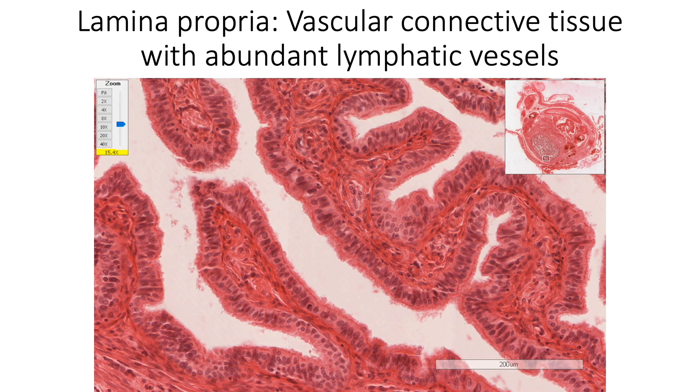Lamina propria is made up of vascular connective tissue and has abundant lymphatic vessels.